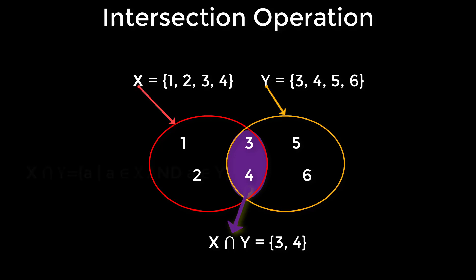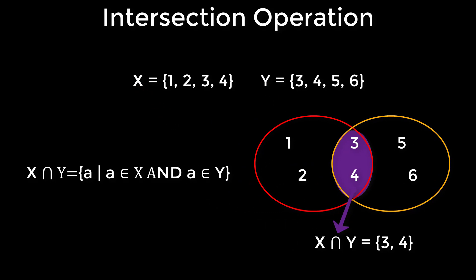According to SetBuilder method, X intersection Y is a set of A such that A belongs to X and A belongs to Y. Here, this AND refers to the common elements. That means, elements which are present in both X and Y.